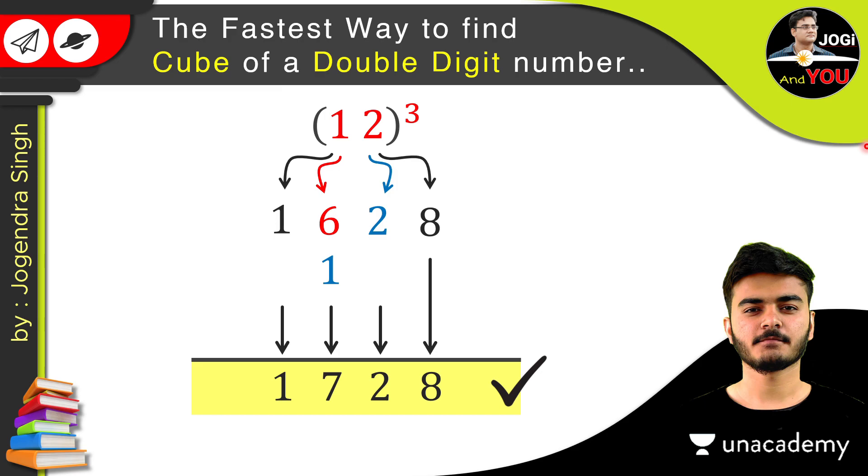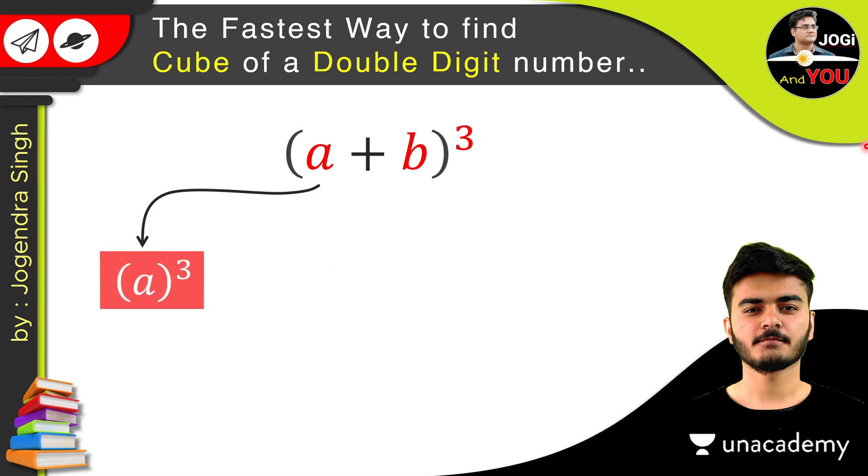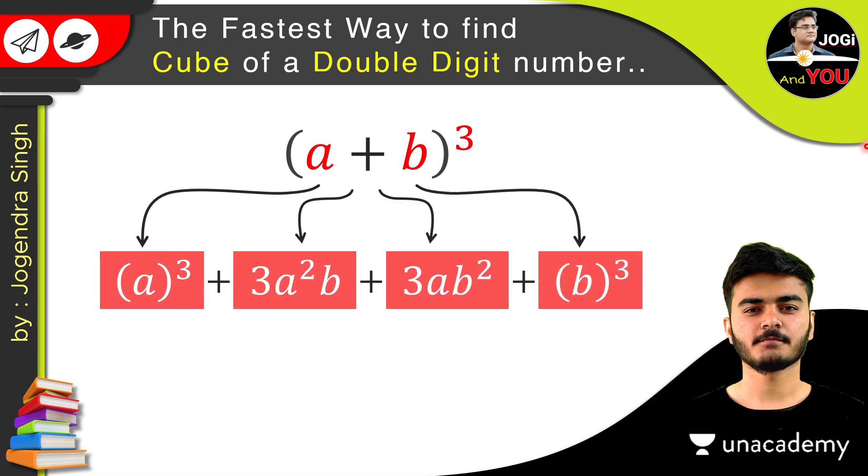So let's get back to the method, and for the method there is a cubic formula which is (a+b) the whole cube. I hope you all know this cubic formula which is a³ + 3a²b + 3ab² + b³. This cubic formula is very important for algebra, and the rishis of India also have used this formula to find the cube of double digit numbers.